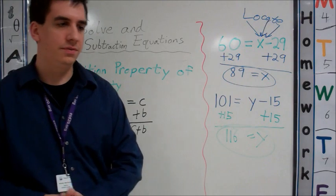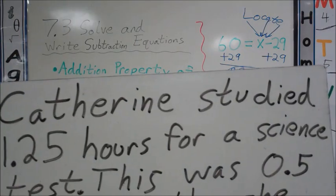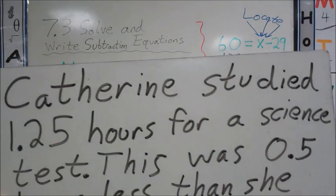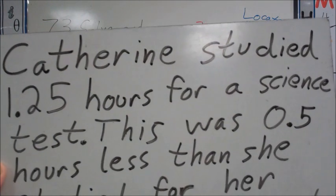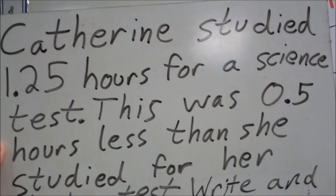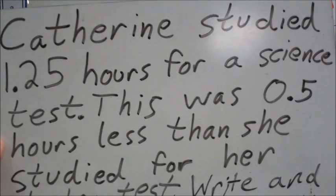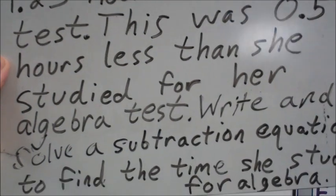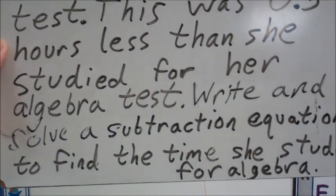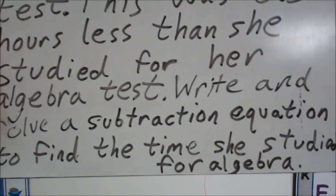We'll look at a word problem right now too. This reads: Catherine studied 1.25 hours for a science test. This was 0.5 hours less than she studied for her algebra test. Write and solve a subtraction equation to find the time she studied for algebra.